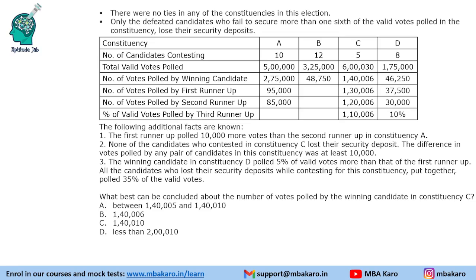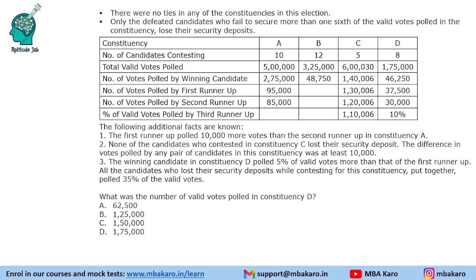Question 3: What can be best concluded about the number of votes polled by the winning candidate in constituency C? As we figured out, an exact number can be determined from the data — 1,46,000 votes. Question 4: What was the number of valid votes polled in constituency D? This is 1,75,000, which we calculated previously.